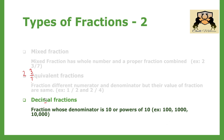Decimal fractions: fractions whose denominator is 10 or powers of 10 are called decimal fractions. Whenever you need to convert a fraction into a percentage, you have the denominator as 100. For example, 2 by 100 is called 2 percent. Similarly, 2 by 1000 is a decimal fraction, and its value is 0.002.